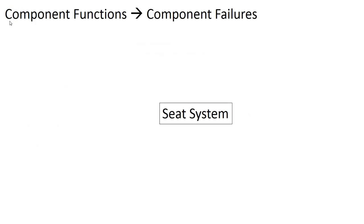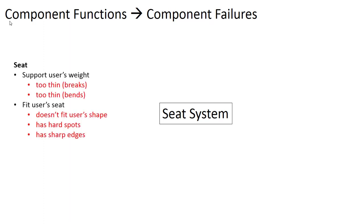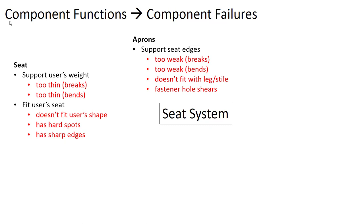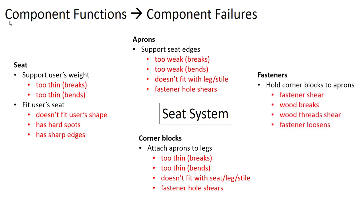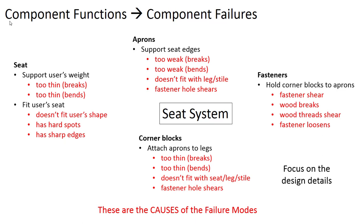At the component level, we look at functions and identify the failures. For the seat system components: the seat had two functions — supporting the user's weight and fitting the user's seat — with several failure modes. The aprons had one function but four identified failures. The corner block had one function but four types of failures. The fasteners similarly had one function and four failures. These component-level failures deal specifically with design details that you can change and analyze — we call these the causes of the failure modes, and these are the ones you focus your design actions on.